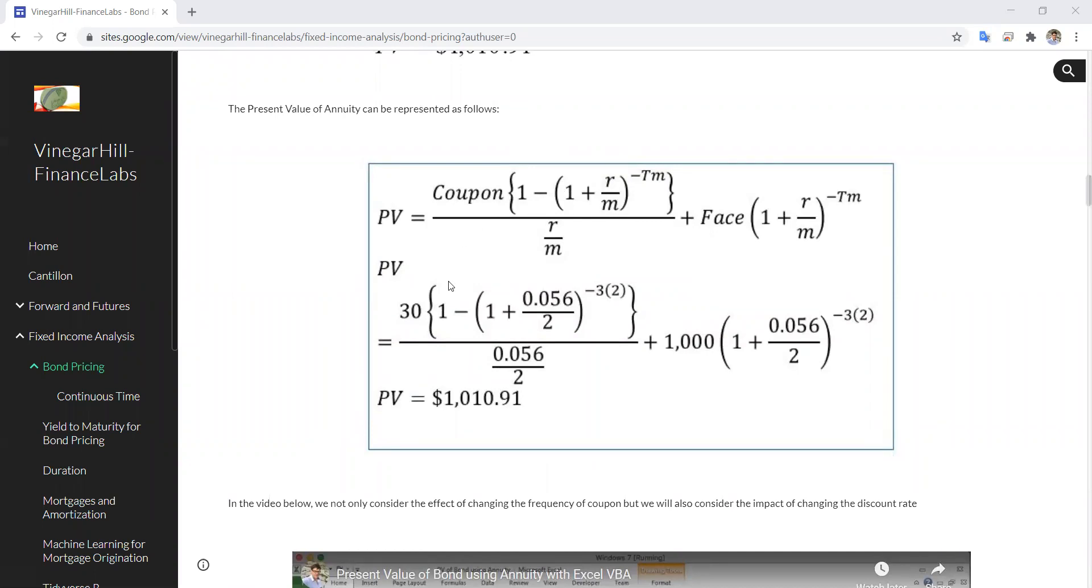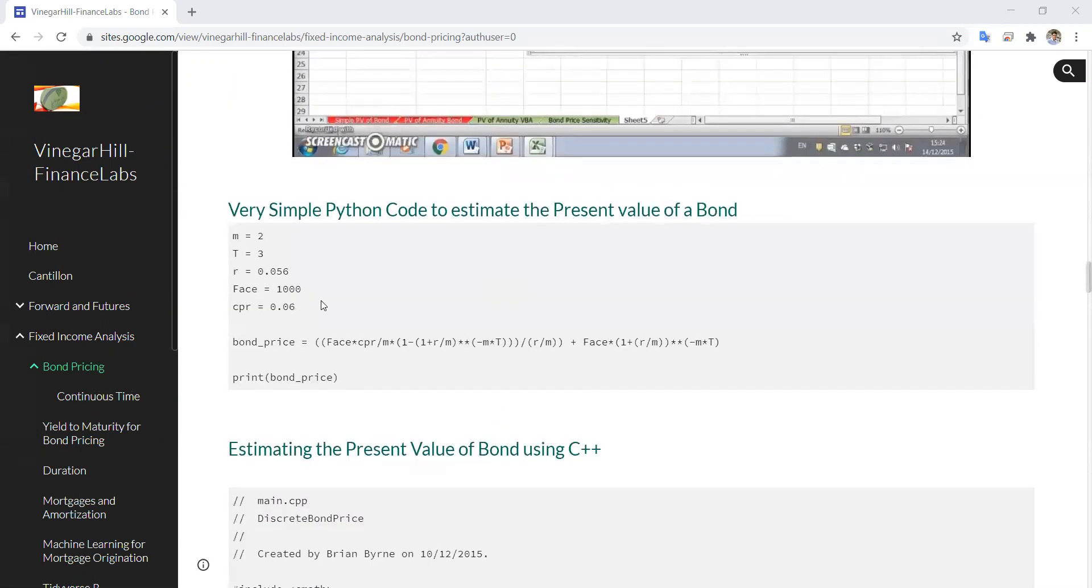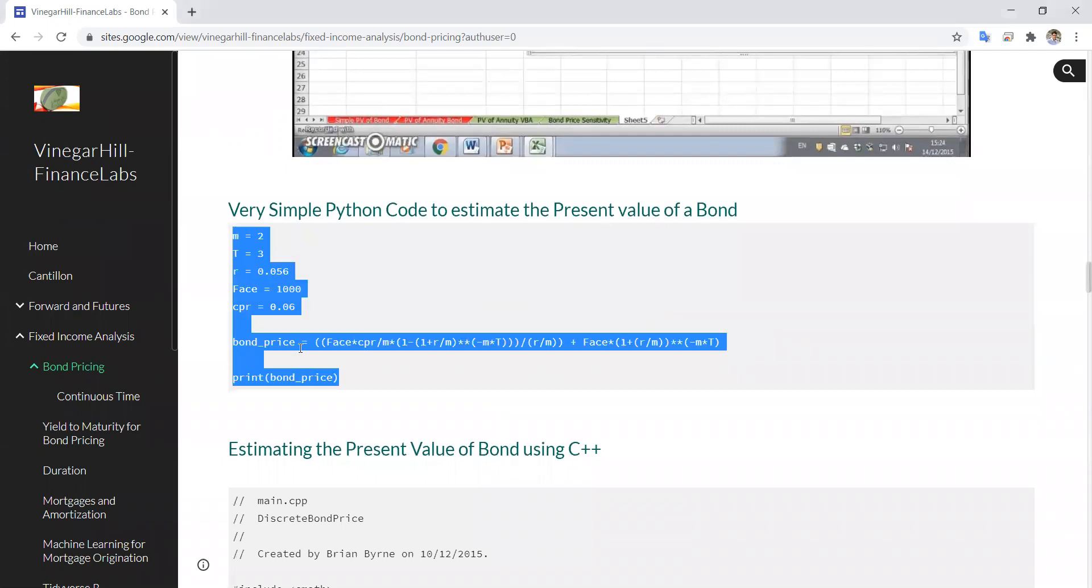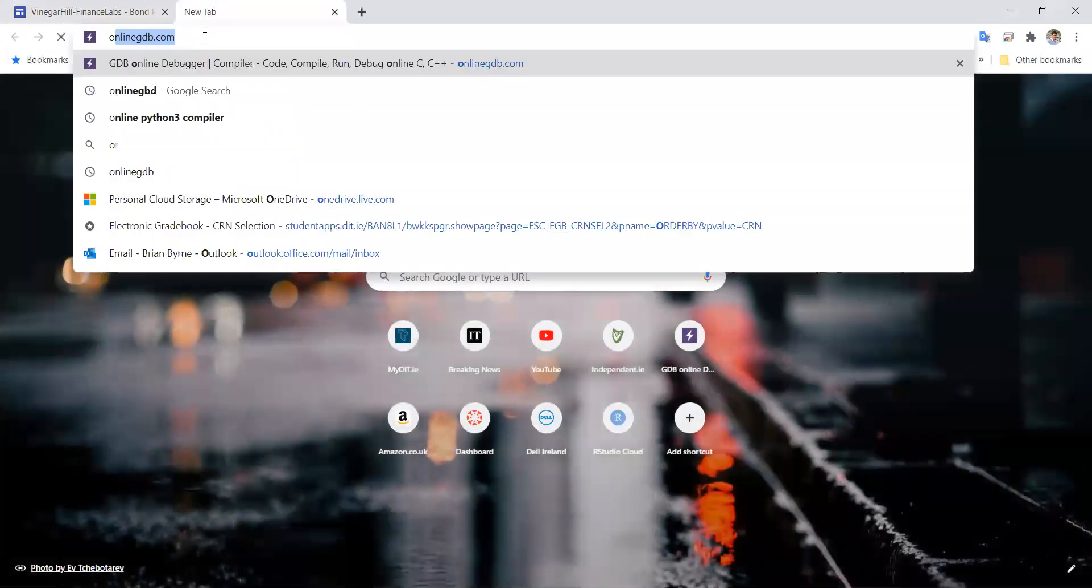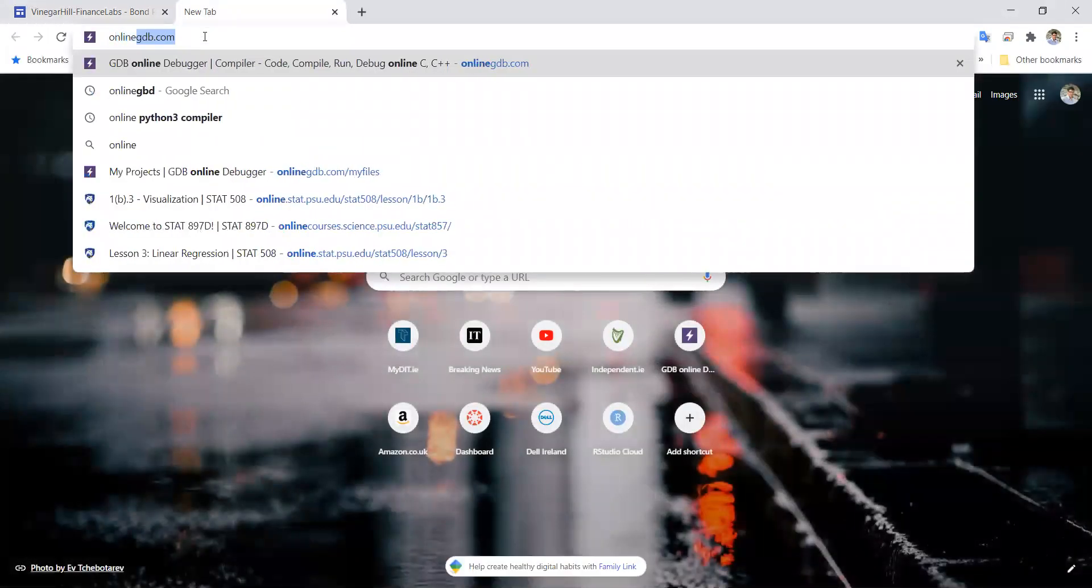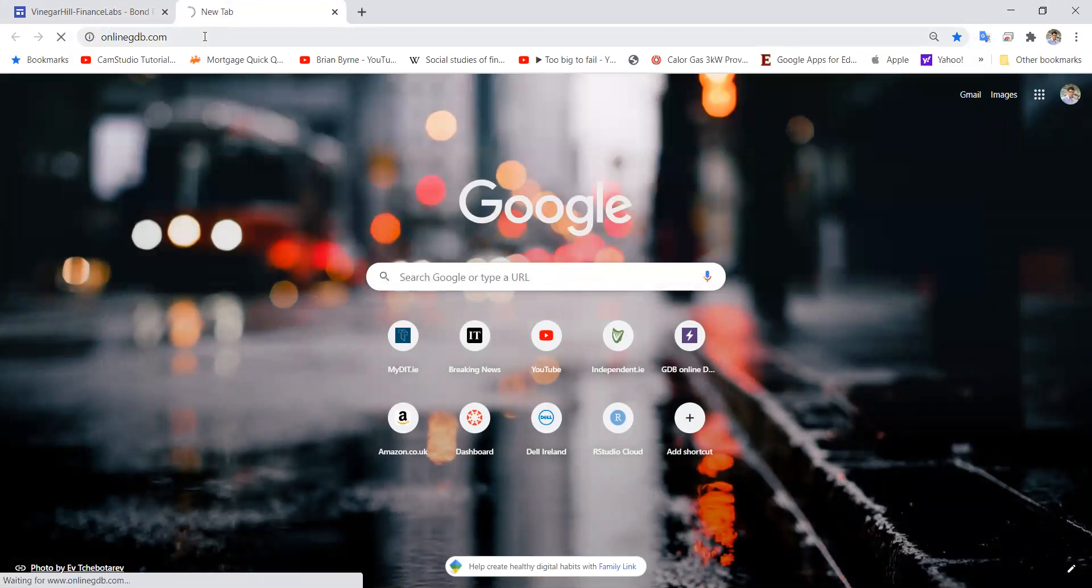If we set it out completely as an annuity, a present value annuity with the coupons being paid twice a year, and we make the adjustment with m for the 3-year period, the value of that present value estimation would be $1,010.91.